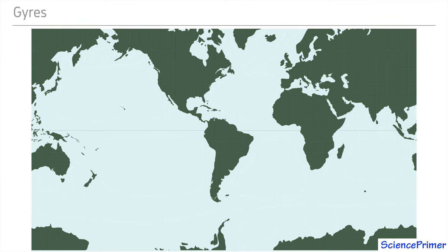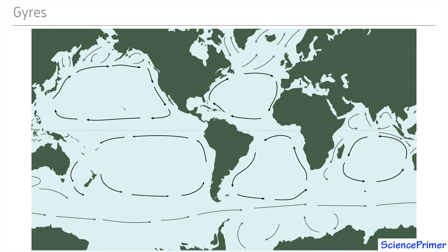Water in the oceans is in constant motion. The major surface currents are driven by energy transferred from the wind by friction. The direction water travels is determined by how the transferred wind energy interacts with Coriolis deflection, other currents, and geological features such as continents and island arcs.